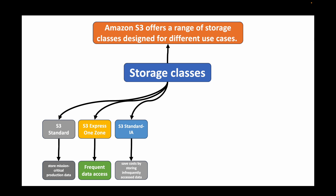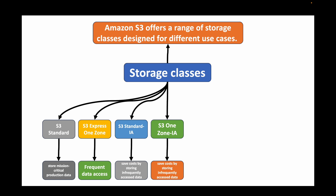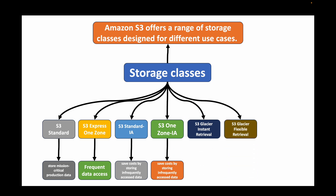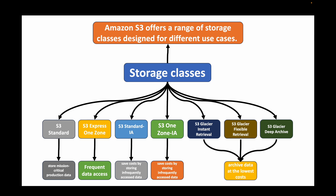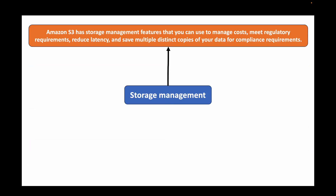We also have S3 One Zone-IA, which helps save cost for infrequently accessed data, but your data is stored in only one availability zone, whereas other options store data across multiple availability zones. Then we have S3 Glacier Instant Retrieval, S3 Glacier Flexible Retrieval, and S3 Glacier Deep Archive — all of which can be used for archiving data at the lowest cost. By default, whenever we store data in S3, S3 Standard is used, but you can change the storage class at any time and be charged accordingly.